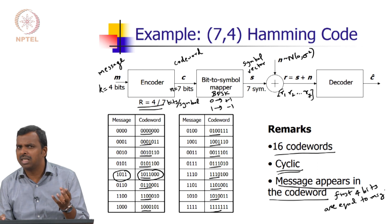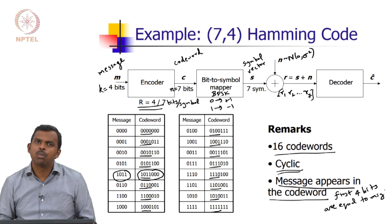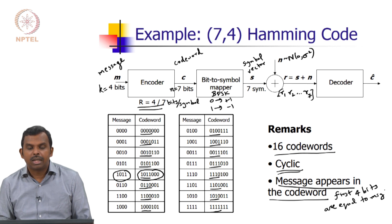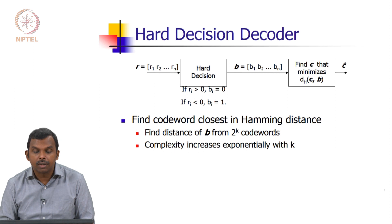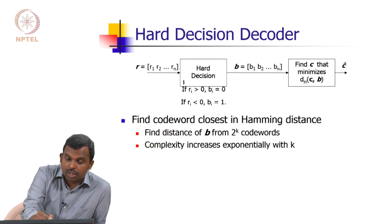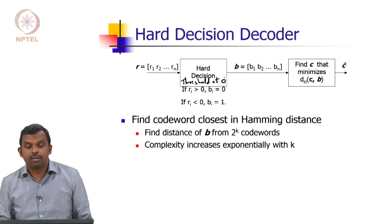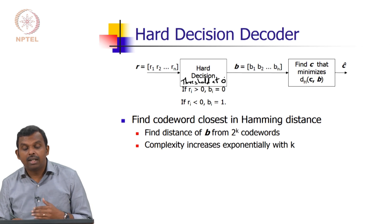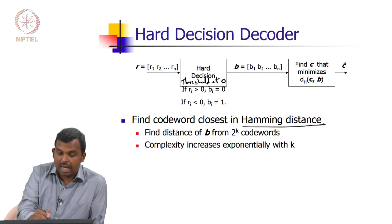At this point we are not interested so much in these properties — we will come back to them later. We are primarily interested in how to build encoders and decoders for such a code. Things are a little more complex than the repetition case, but the ideas we picked up there will work here as well. First is the hard decision decoder. You can do a hard decision with a threshold at 0, and then find the codeword which is closest in Hamming distance. So let me describe what Hamming distance is.